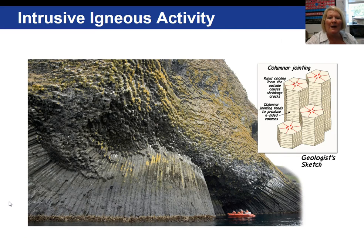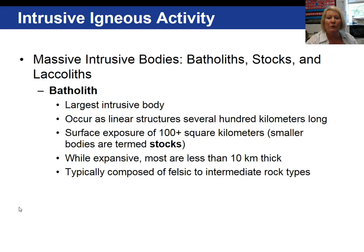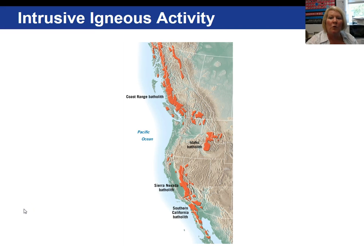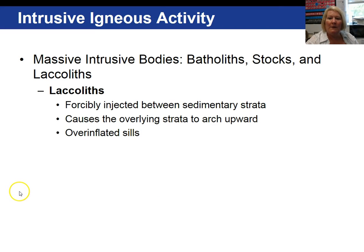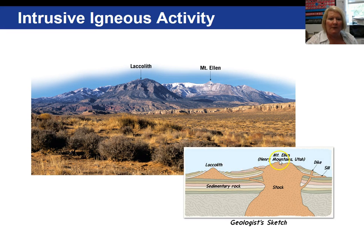Columnar jointing can form when magma cools from the outside inward, and shrinkage cracks form into six-sided columns. Batholiths are the largest plutons, over 100 square kilometers, while smaller bodies are termed stocks. Batholiths are the cores of mountain chains — examples include the Coast Range batholith, the Idaho batholith, the Sierra Nevada batholith, and the Southern California batholith. A laccolith is a variation of a sill where lava is injected between sedimentary rock layers, causing the layers to arch upward in a mushroom shape — essentially an over-inflated sill. Here is a geologist's sketch of a laccolith at Mount Ellen in the Henry Mountains of Utah, with some dikes and sills also present.